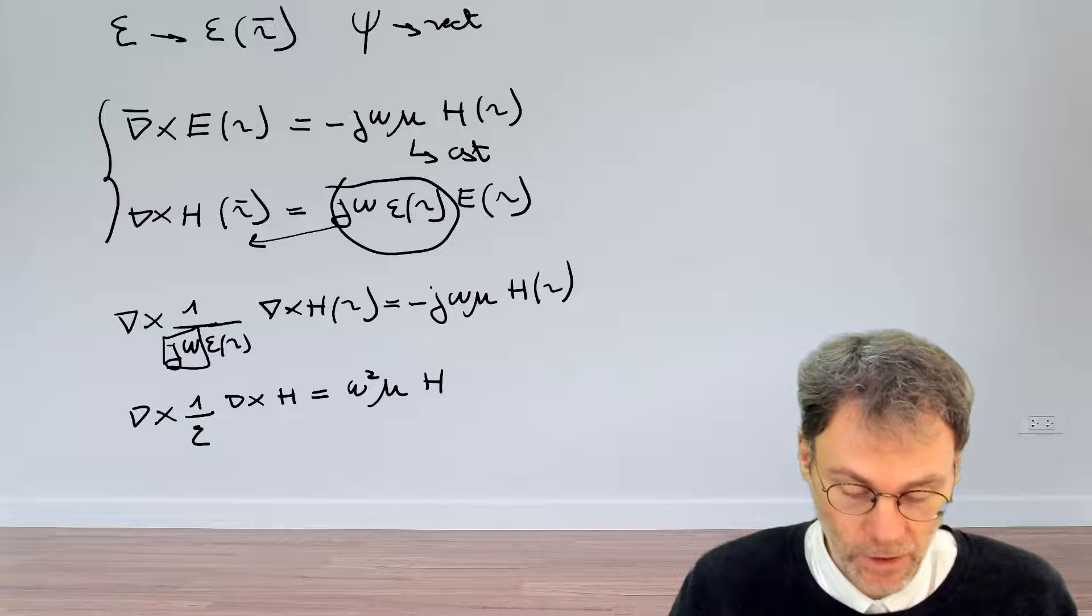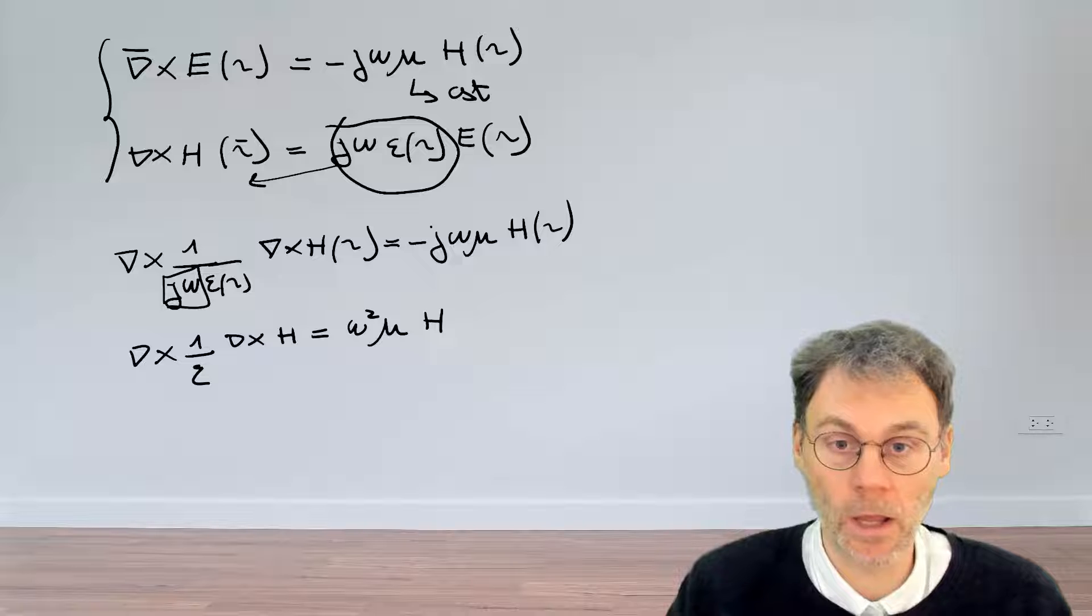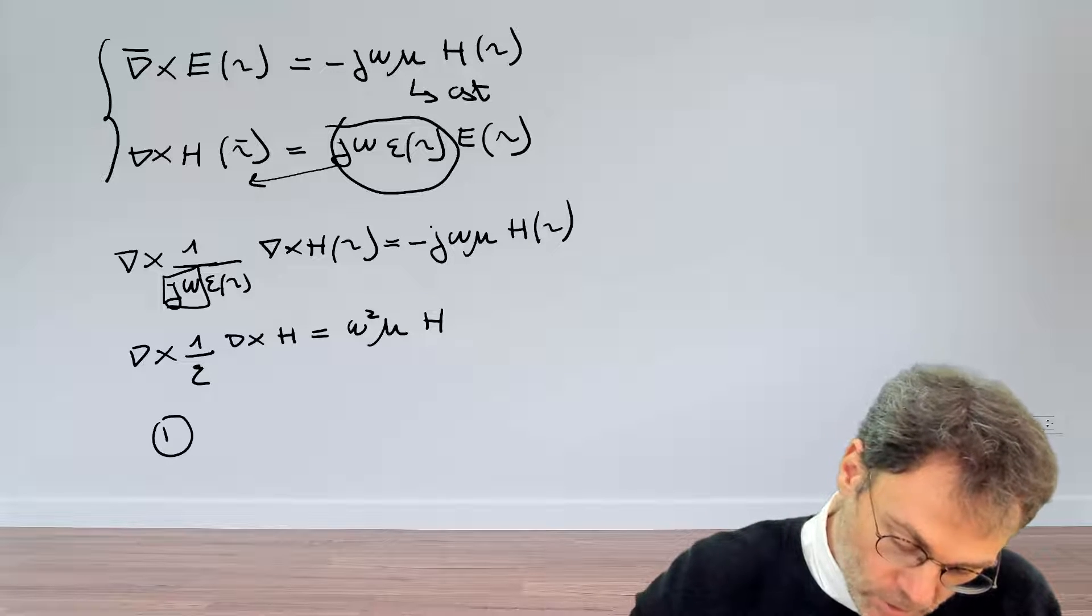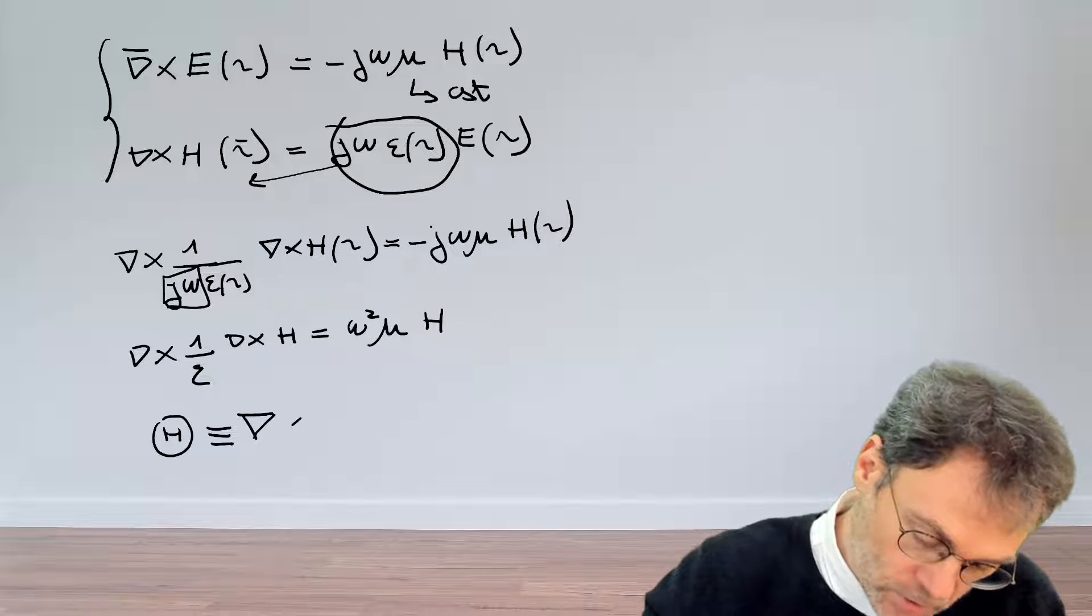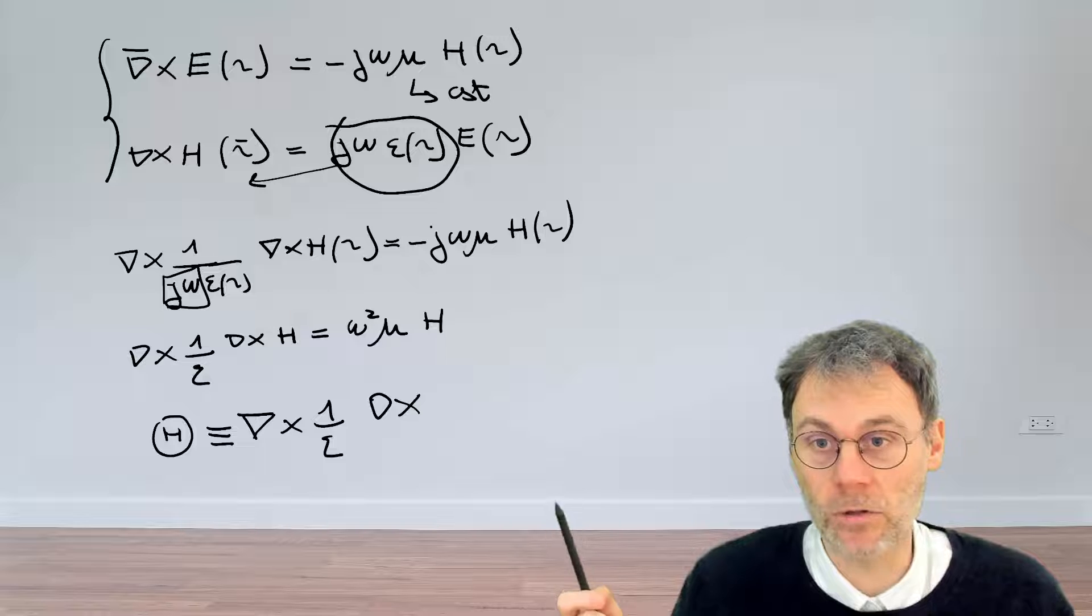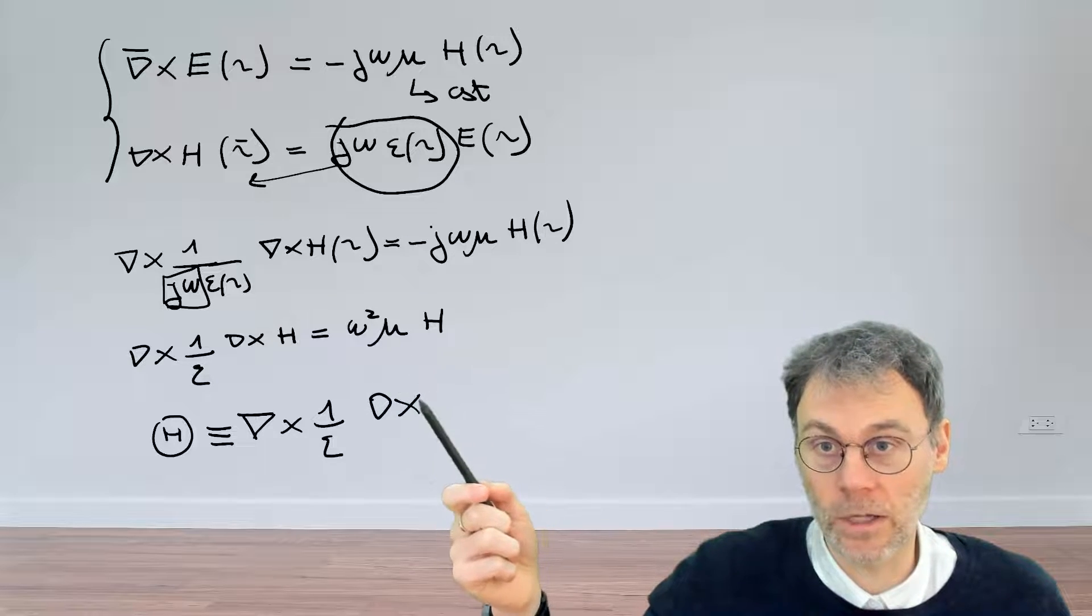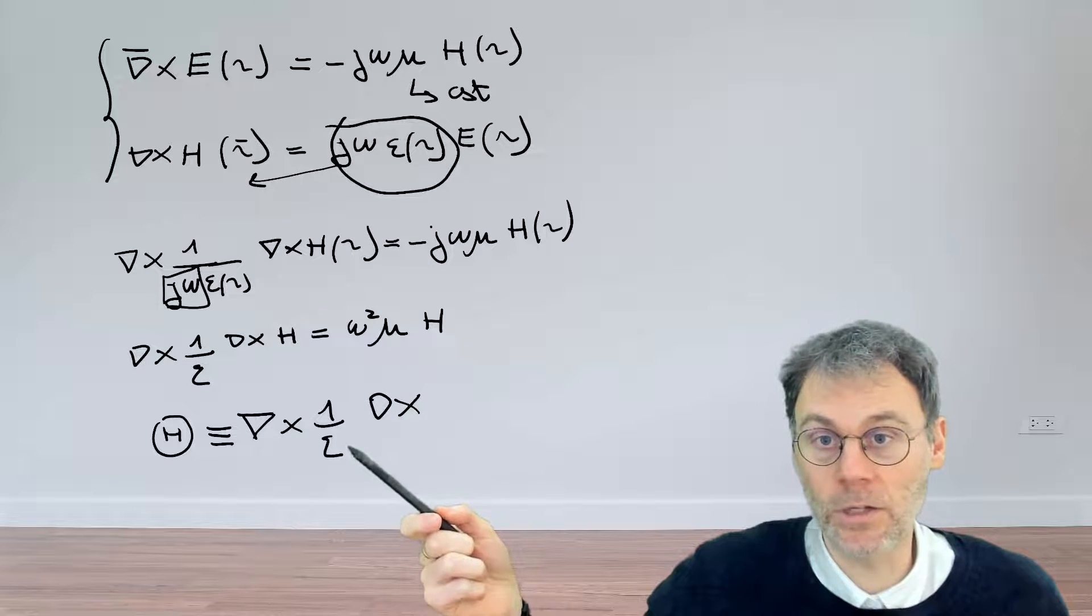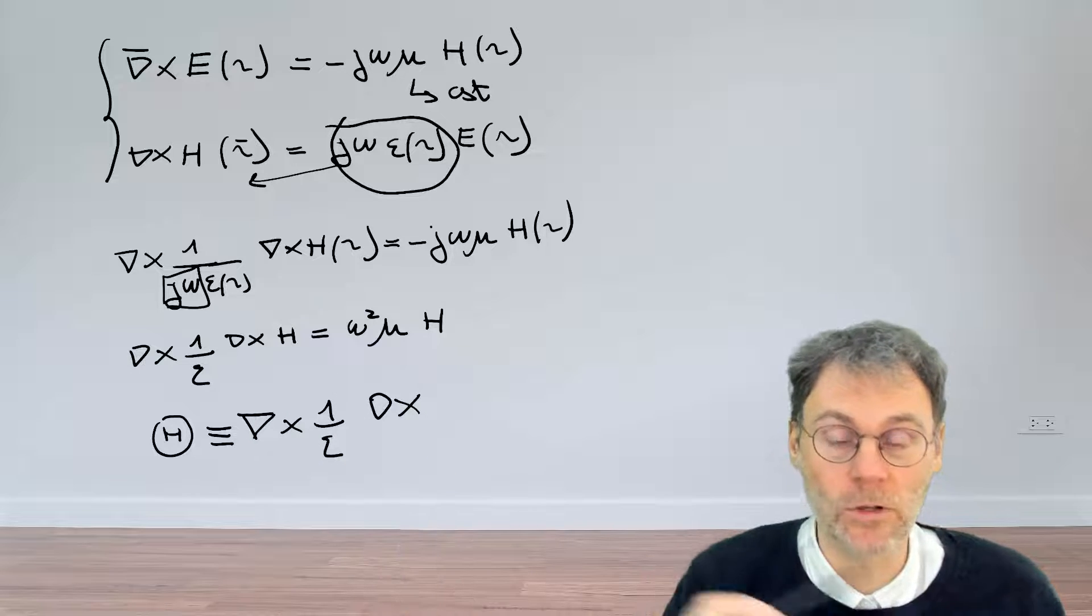So this is the equation that we've derived. And again, as I mentioned before, mu is a constant here. Now, what we can do to clean this up a little bit is we can define another linear operator, capital theta in this case, which is defined as follows: curl 1 over epsilon curl. So what this operator does is, if it operates on a vector function, is first of all taking the curl of that vector function, then dividing the result by epsilon, which again can be a function of the position, and then of the resulting vector function, take the curl again. So this is what this operator does in words.